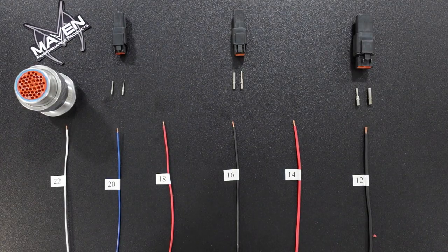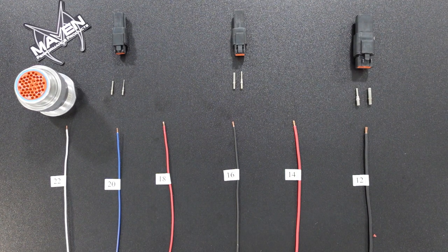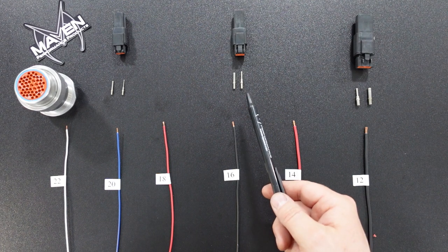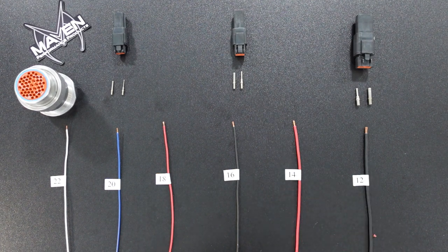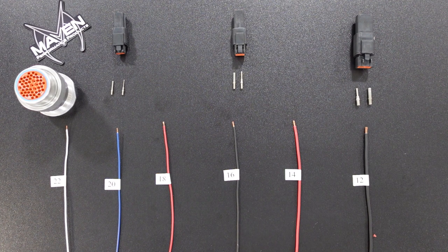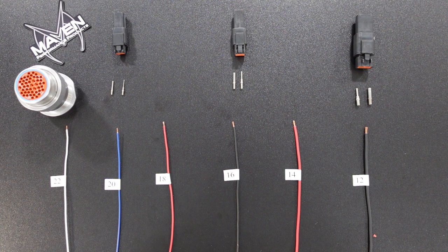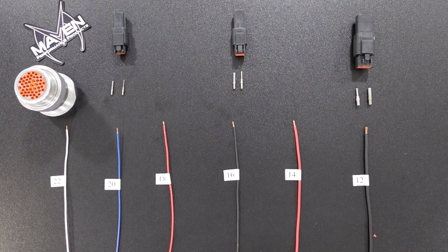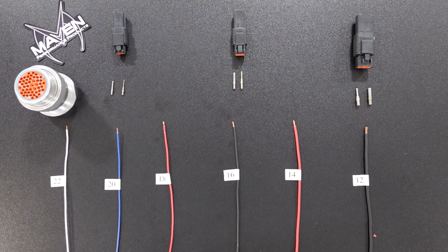The DT series of connectors also uses the same crimp terminals. So the DTM, which is for 20 gauge, the DT, which is for 16 gauge, and the DTP, which is for 12 gauge. When you look at these, you think, well, what happens if I have a 14 gauge or an 18 gauge or a 22 gauge? I can't use these. Well, the short answer is no. We're going to go through what you can do to use these different wire sizes.